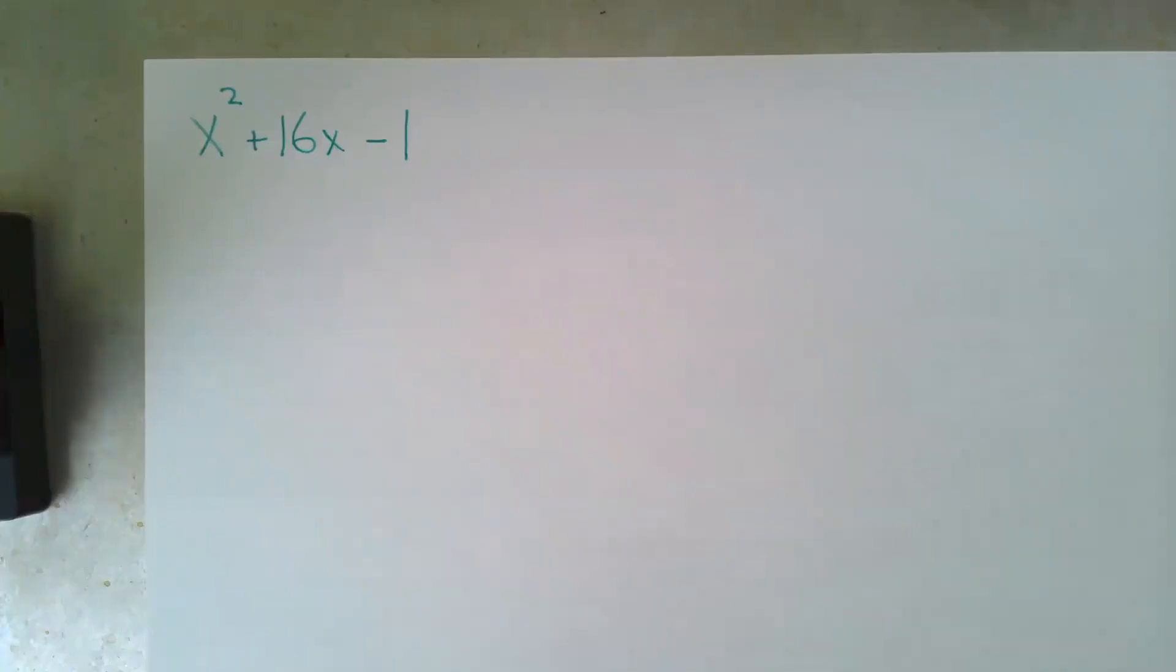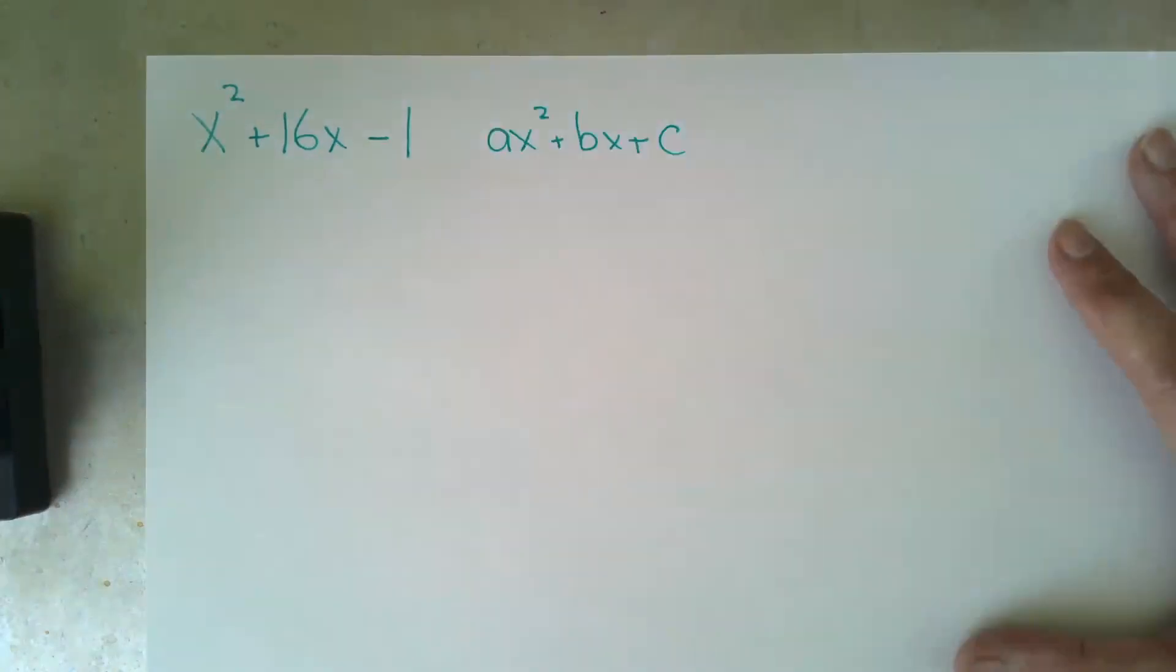Okay, to remind everybody, completing the square is the action we're taking to go from standard form ax squared plus bx plus c to vertex form a times x minus h squared plus k, where h comma k is our vertex.